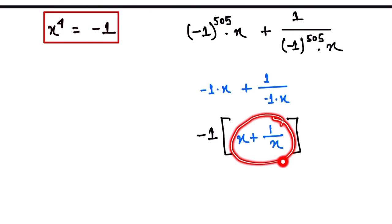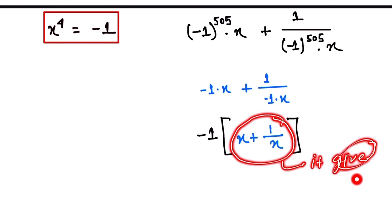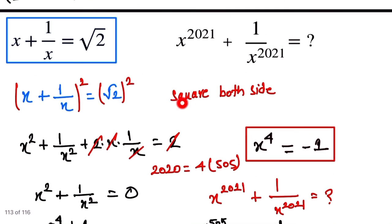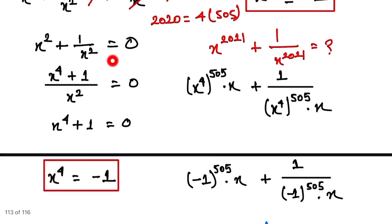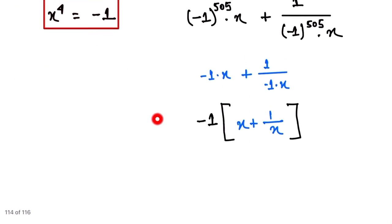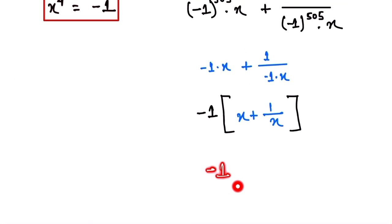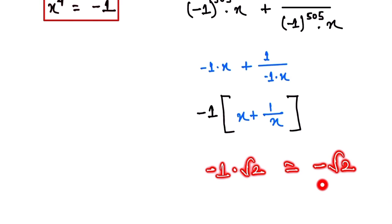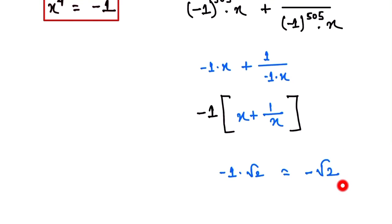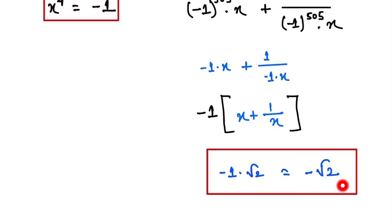So we have -1 times x plus 1 by x. Now we substitute the value already given in the question: x plus 1 by x equals √2. So the expression becomes -1 × √2, which equals -√2. And this is our final answer: the value of x^2021 + 1/x^2021 is -√2.